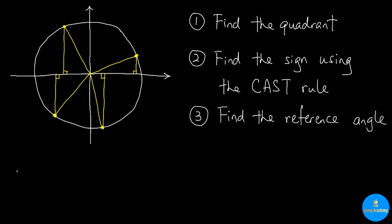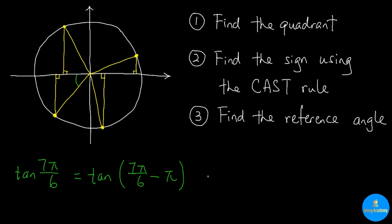Let's see more examples. For tangent of 7π over 6, first, 7π over 6 is in the third quadrant because it is greater than π but less than 3π over 2. By the CAST rule, tangent is positive in the third quadrant — it's the T quadrant. Hence, tangent of 7π over 6 equals tangent of the reference angle, which is 7π over 6 minus π, giving tangent of π over 6. Since we know tangent of π over 6 is √3 over 3, we have completely solved the value of tangent of 7π over 6.